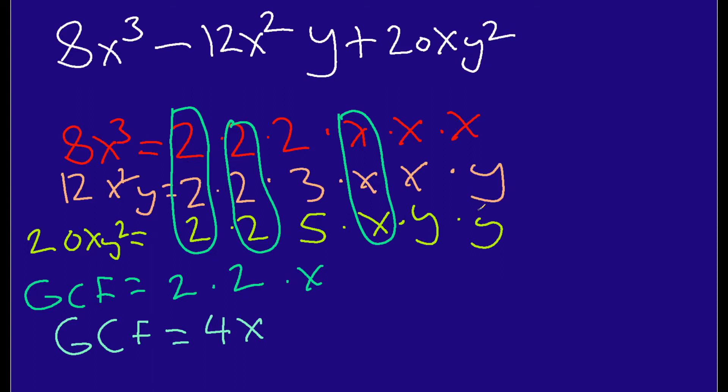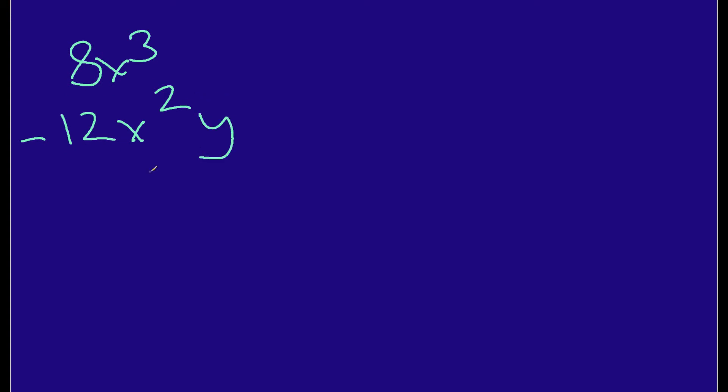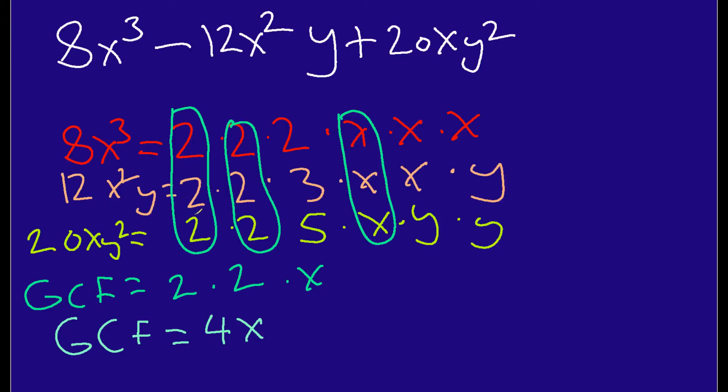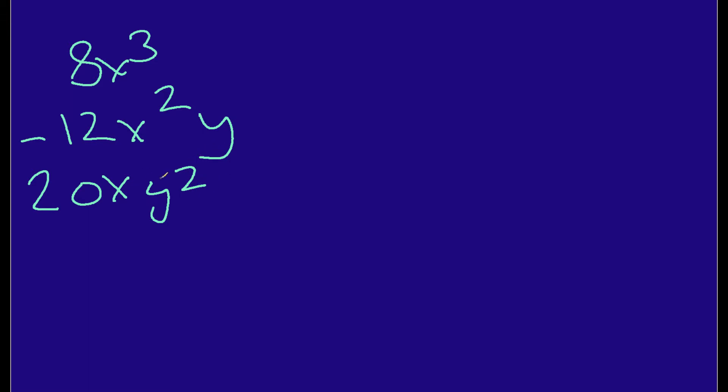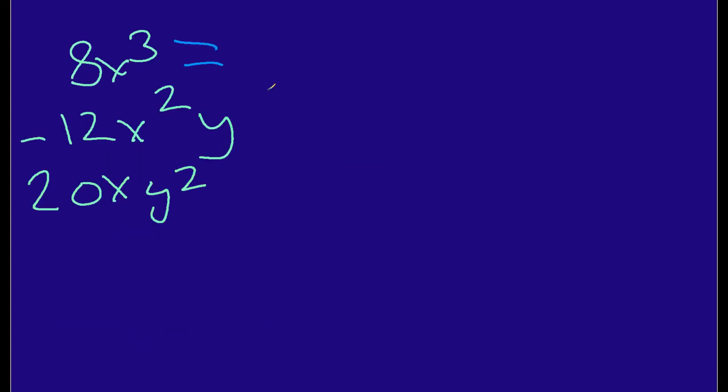Now, I'm going to show you the next step. Next, I'm going to take each of my terms. So, I had 8x to the 3, I had minus 12x squared y, and I have 20xy squared. Now, I'm going to take my greatest common factor, which was this 4x, and I'm going to put an equal sign for each one. I'm going to put 4x, because this is my greatest common factor. I'm going to put it in each one.